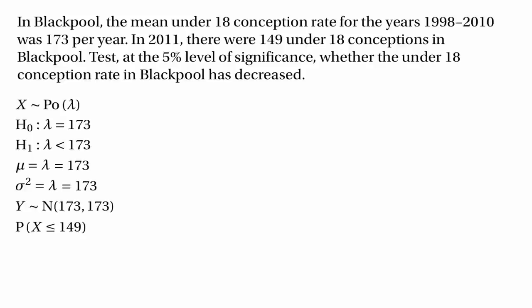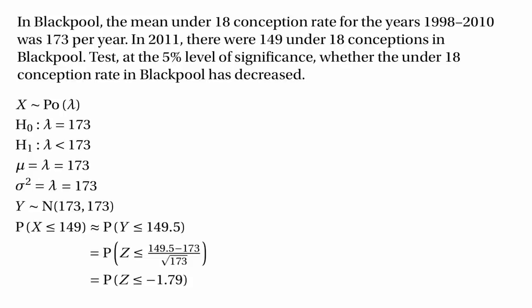The probability we need is the chance that x is less than or equal to 149, because we need to know the probability of getting a number like 149 under-18 conceptions — and like 149 means 149 or less. This is approximately the same as the chance that y is less than or equal to 149.5, applying a continuity correction when using a continuous random variable to approximate a discrete one. To find that probability we standardise: it's the probability that z is less than or equal to (149.5 minus 173) divided by the square root of 173, which is z less than or equal to minus 1.79.